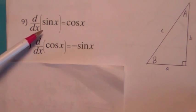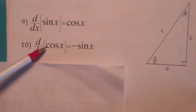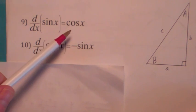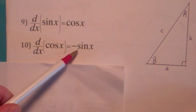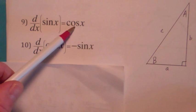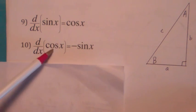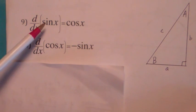The derivative of the co-function of the sine function, or the cosine function, is equal to negative the co-function here. Negative the co-function of cosine of x is negative sine of x. So if you can remember the first one, you can relate the second one using co-functions.